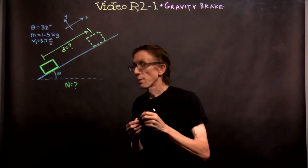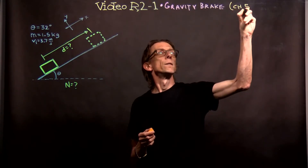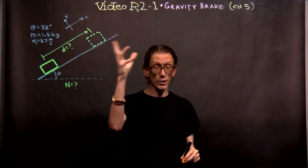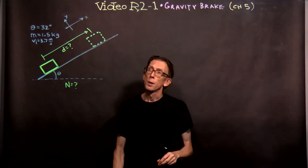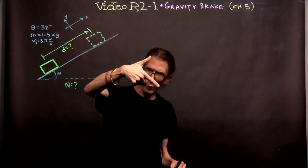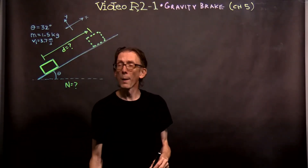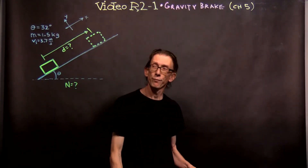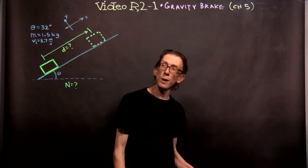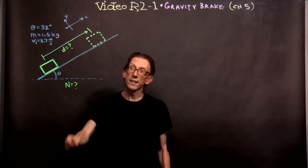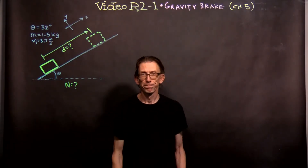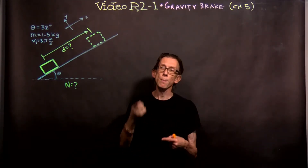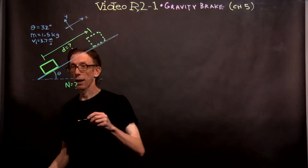Today we're going to go back to chapter 5. This is from chapter 5 and we're going to do an example of a block moving up a hill. This is the Newton's laws chapter. We've got a block moving up the hill and we're going to rotate our axes up the hill. What we want to know is: if the angle is 32 degrees, the mass is 1.5 kilograms, and the initial speed is 3.7 meters per second uphill, what is the displacement d and what is the normal force? The first step is to draw a free body diagram of this block.